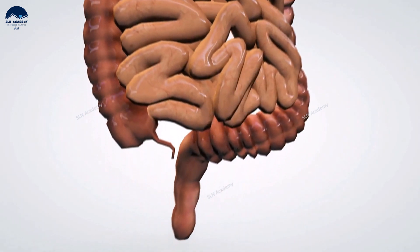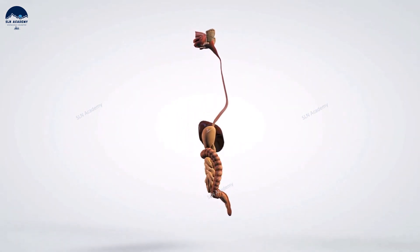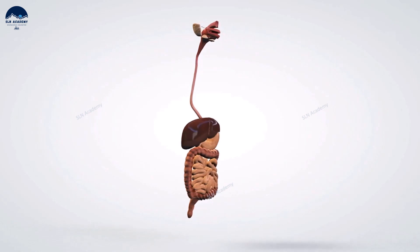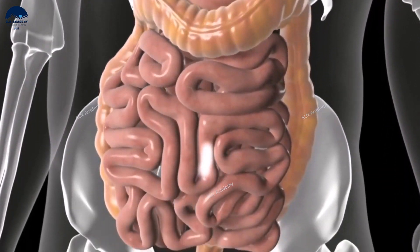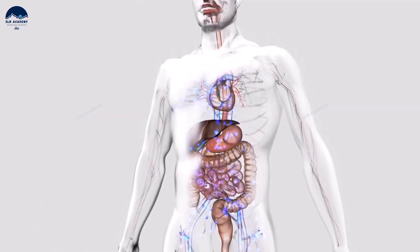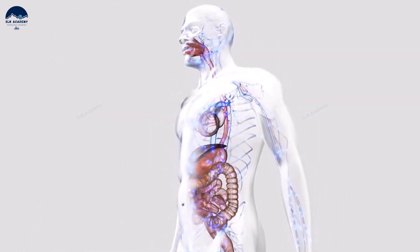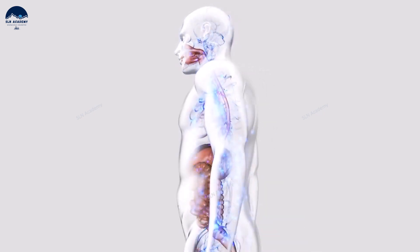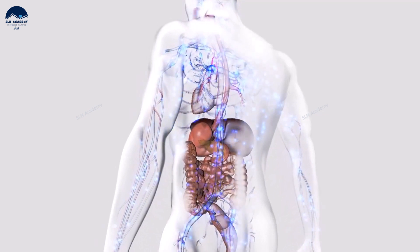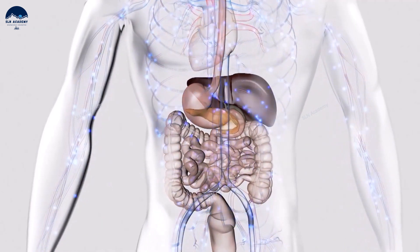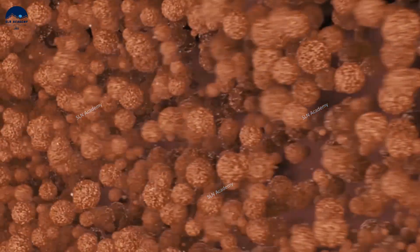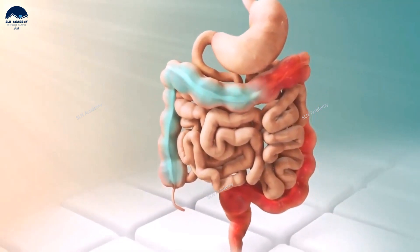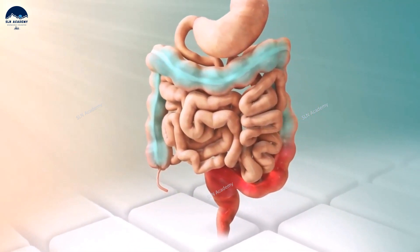The food passes through more than 22 feet of tubing called the digestive system. The digestive system breaks down the food into small molecules, out of which the useful ones are absorbed by blood and sent throughout our body. This process of breaking down food into small absorbable nutrients is called digestion. The digestive system also plays a key role in removing waste material from the body.